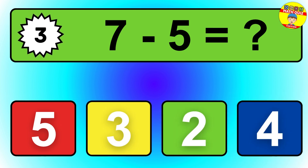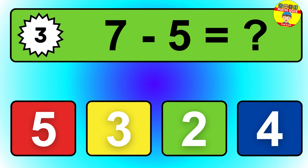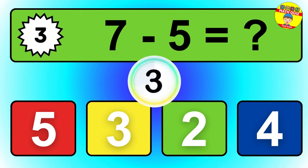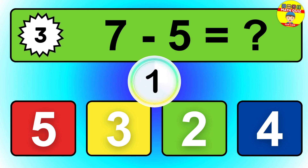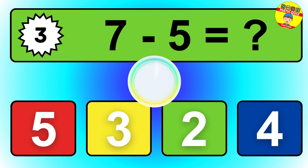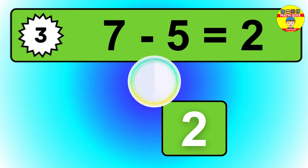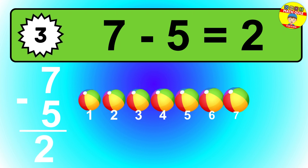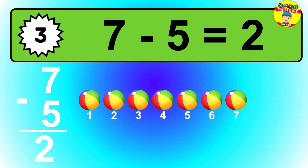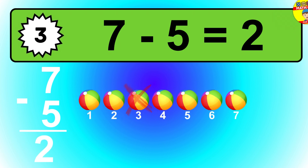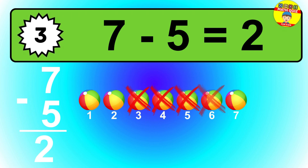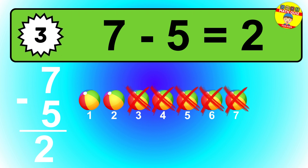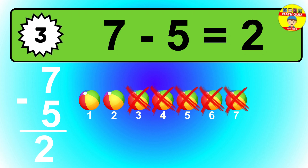Question 3. 7 minus 5 equals what? So the answer is 7 minus 5 is 2. Let's count it: 1, 2.